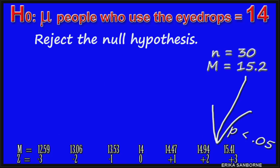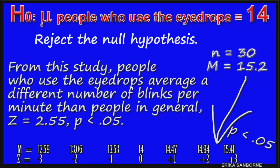The null hypothesis was the population mean for people who use the eyedrops would be 14, just like everybody else. Based on this study though, it's not. People who use the eyedrops average a different number of blinks per minute. This is when we reject the null hypothesis. This sample is just too unusual. We are going to give some credit for this observed difference to the eyedrops. From this study, people who use the eyedrops blink a different number of times than ordinary people.